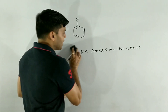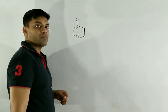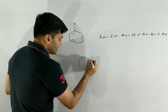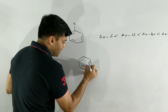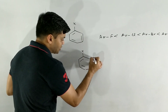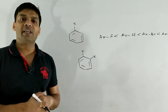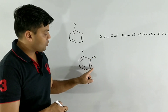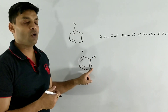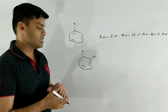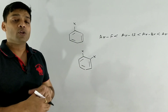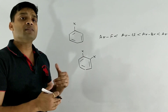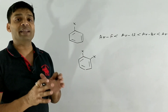Now let's move on to the concept of dihalobenzene. Dihalobenzene is a benzene ring with two halogens substituted on it — for example, ortho-dihalobenzene, meta-dihalobenzene, and para-dihalobenzene. Comparing these three isomers, the boiling points of all three dihalobenzene isomers are nearly the same.